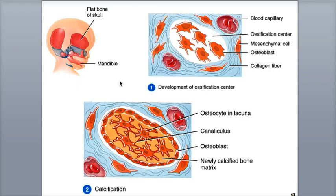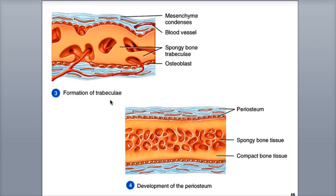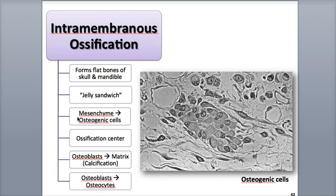The steps of intramembranous ossification include development of the ossification center, calcification, formation of trabeculae, and finally development of the periosteum. In the first step, mesenchyme cells gather together at the locations where the bone will develop and begin to differentiate into osteogenic cells, which will then become osteoblasts that start to secrete the extracellular matrix.